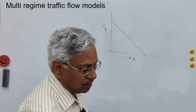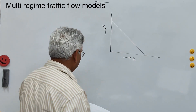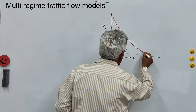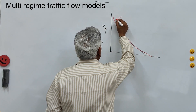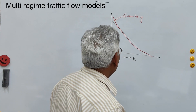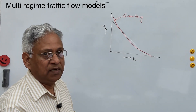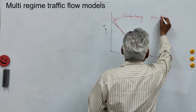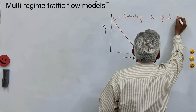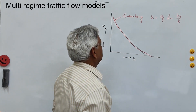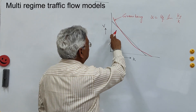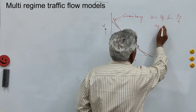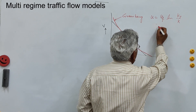The Greenberg model is a logarithmic form of the model. You can watch my earlier videos on Greenshield, Greenberg, and Underwood — I have made three different videos. This is Greenberg: u = u_f · ln(k_j / k). This is a logarithmic relationship, and the problem with this is that when k equals zero, density becomes infinite, so the free flow speed is not determined by this equation.